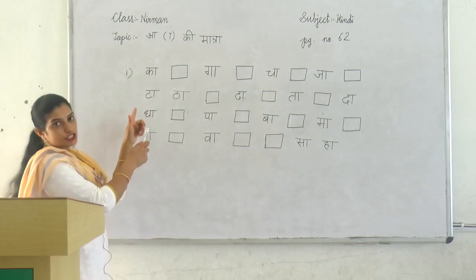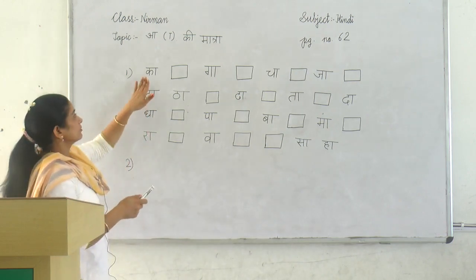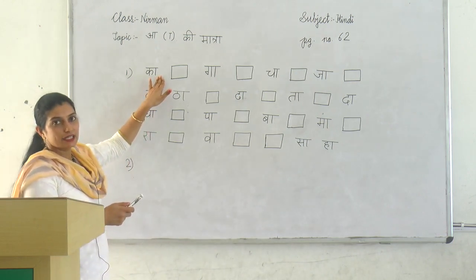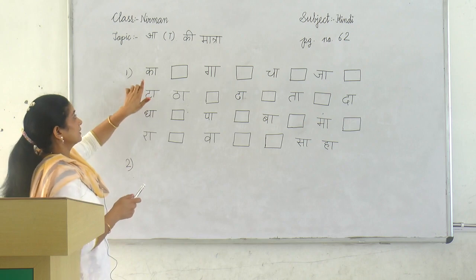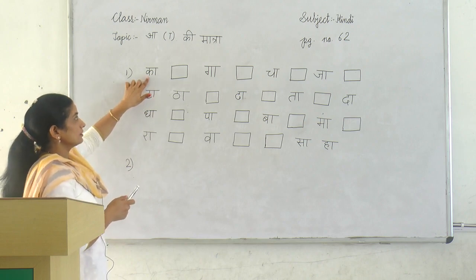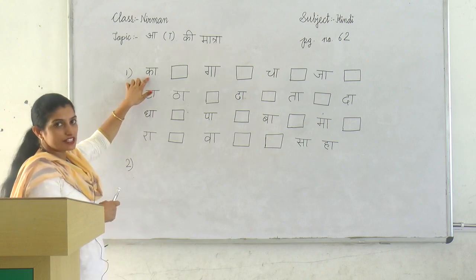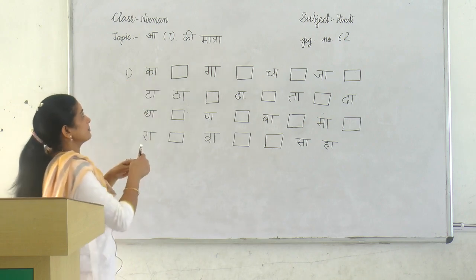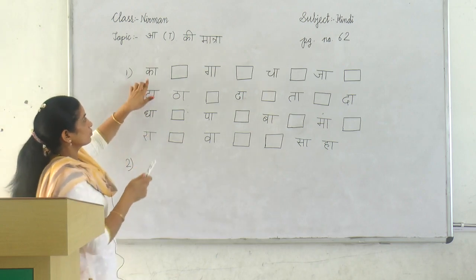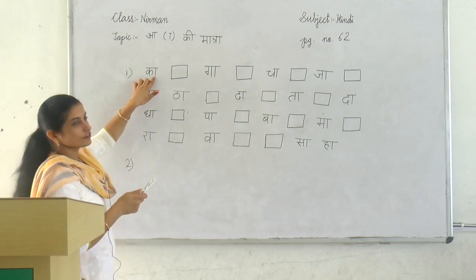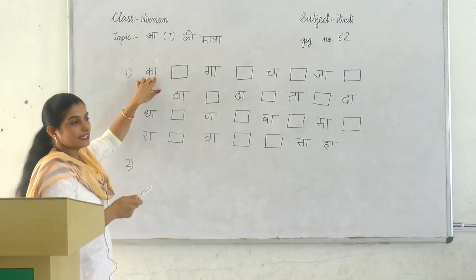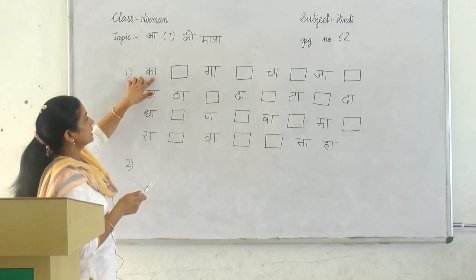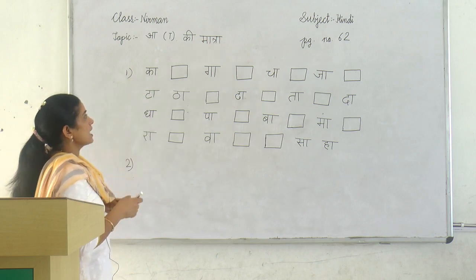There is first question: Vyanjan with A ki matra. Vyanjan — K ek Vyanjan hai aur A ki matra kisse banti hai? Swar se. So Vyanjan aur Swar ko ikattha likha hua hai. Ka, kha.